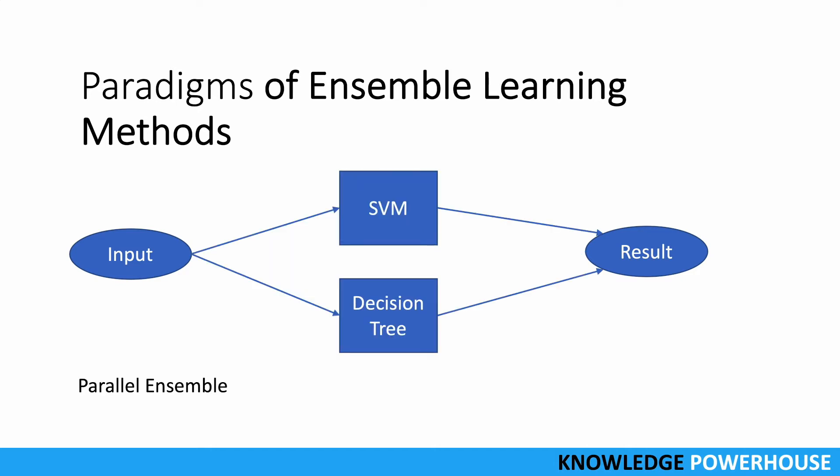The other is parallel ensemble. Here we divide the input dataset into different parts — one goes to SVM and another goes to a decision tree — and then we combine whatever results we get. We are using multiple models in parallel, and the prediction results from these models are combined to give the final output of the ensemble model.